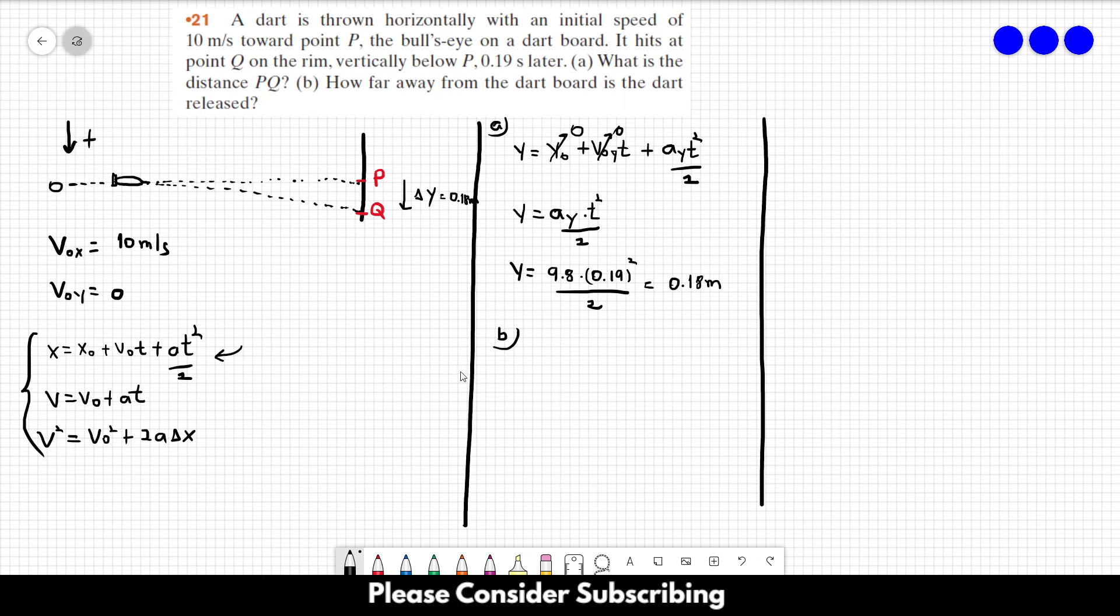So let's write this equation for the x direction. x equals x0 plus v0x times t plus the acceleration in the x direction times t squared over 2.